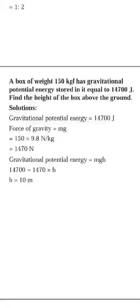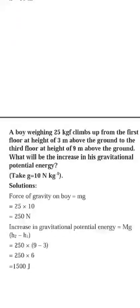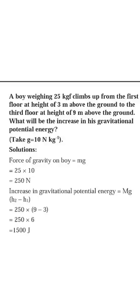A body of weight 150 kgf has gravitational potential energy equal to 14700 joules. Find the height of the box above the ground. Mass is 150, PE is 14700, h is unknown. Using mgh: mass is 150, g is 9.8, so 150 × 9.8 = 1470. Therefore 14700 = 1470 × h, giving height = 10 meters.